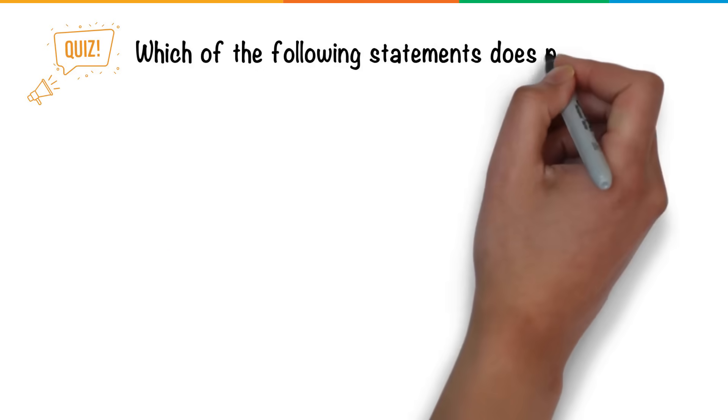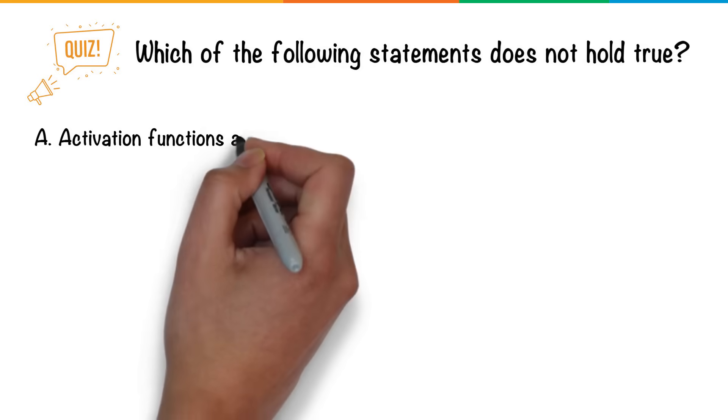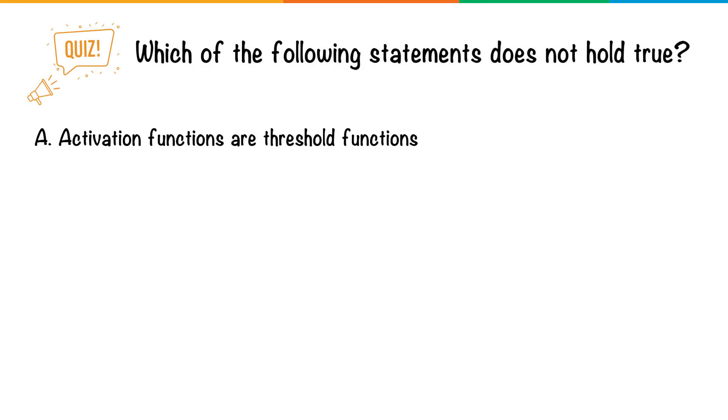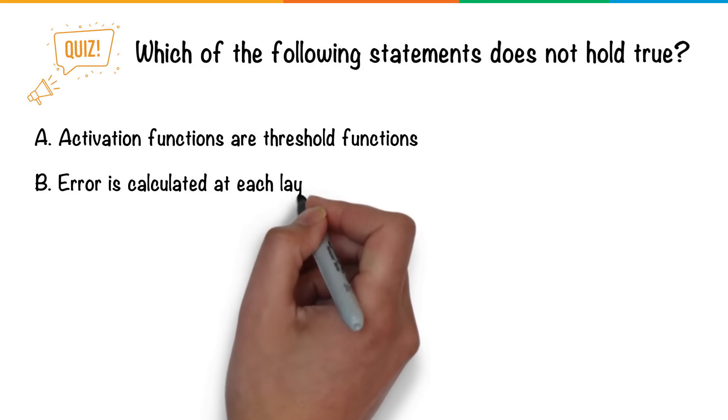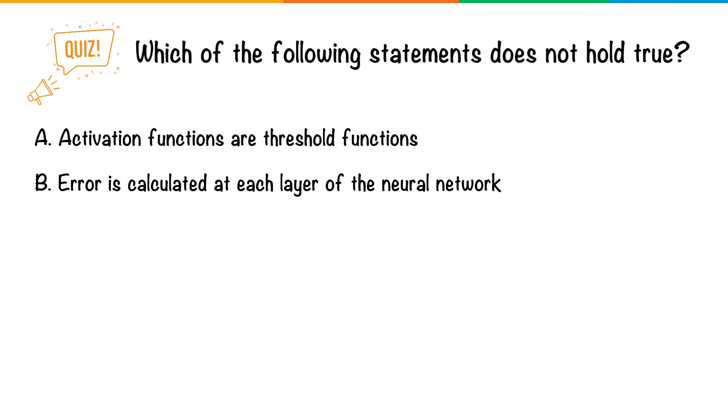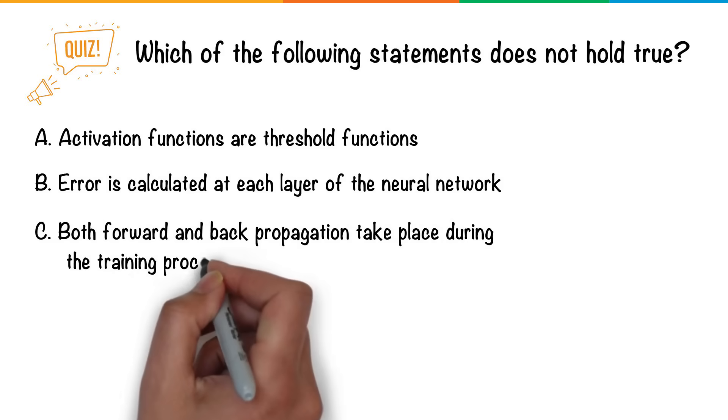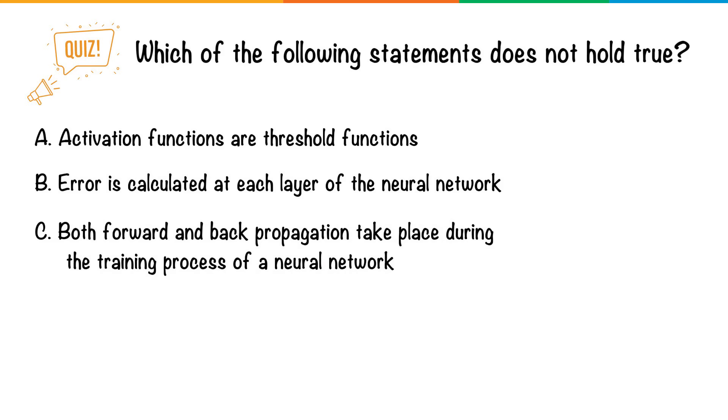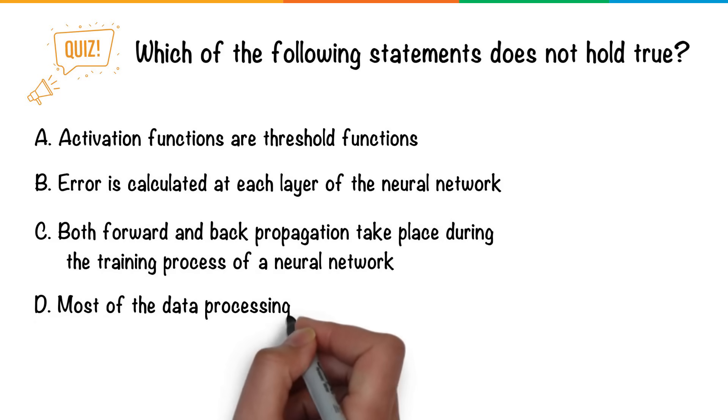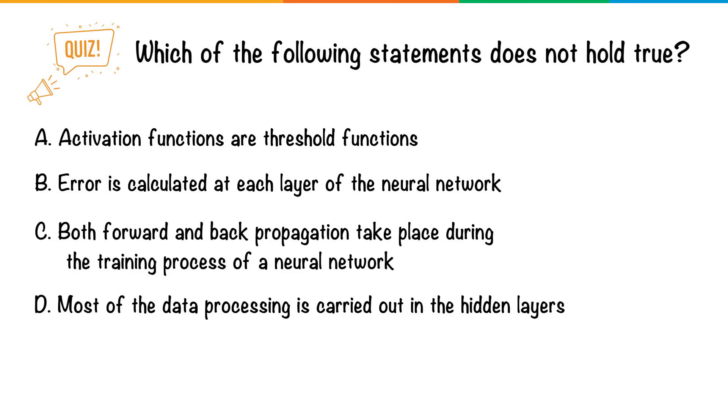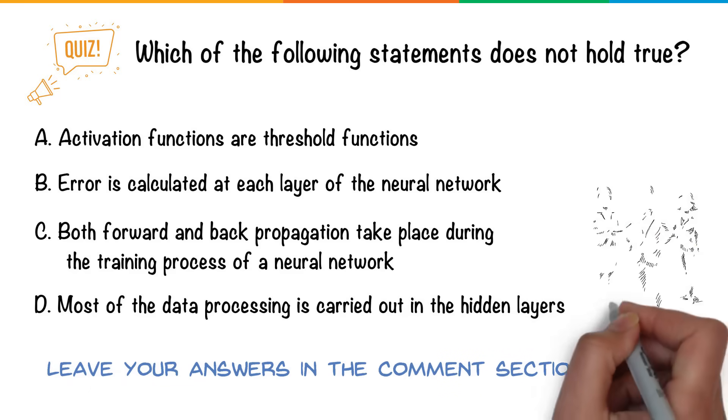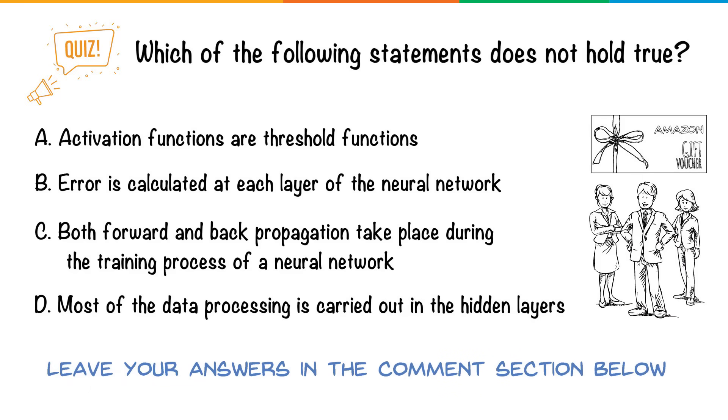So, here's a question for you. Which of the following statements does not hold true? A. Activation functions are threshold functions. B. Error is calculated at each layer of the neural network. C. Both forward and back propagation take place during the training process of a neural network. D. Most of the data processing is carried out in the hidden layers. Leave your answers in the comments section below. Three of you stand a chance to win Amazon vouchers. So, don't miss it.